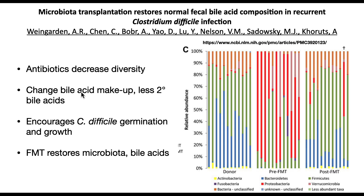Weingarten hypothesized that if the microbiome changed and allowed C. diff infection, somehow restoring the microbiome to what it was before would cure it. He showed that if afflicted patients were given a microbiota from a healthy donor — via an enema or pills that have now been developed — that transplanted microbiome gets released, starts making secondary bile acids, and suppresses the C. diff infection. The success rate for cure was over 95% in these cases.